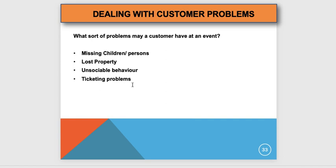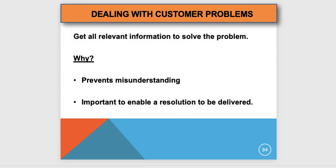Customer problems at events include: missing children or persons; lost property — phone, ticket, car keys; unsociable behaviour such as spitting, swearing, or excessive drinking; and ticketing problems — a ticket not working or someone sitting in the wrong seat. These are the sorts of problems you'll be dealing with regularly.